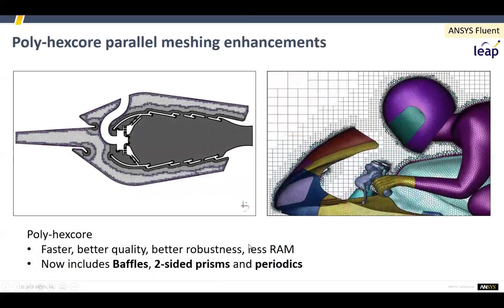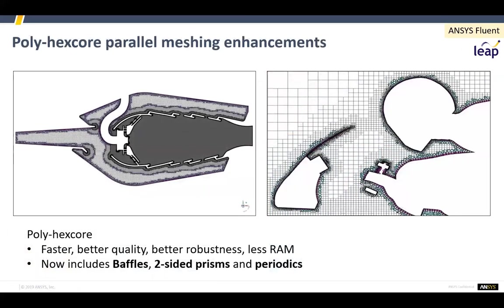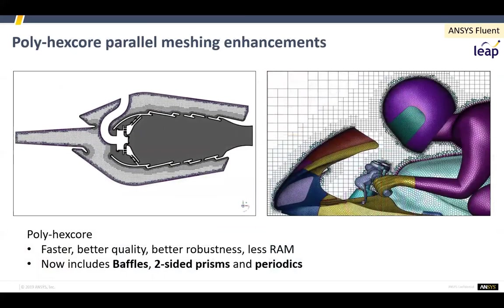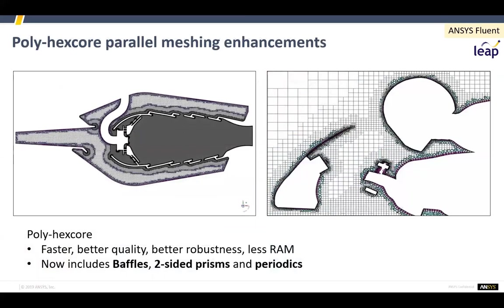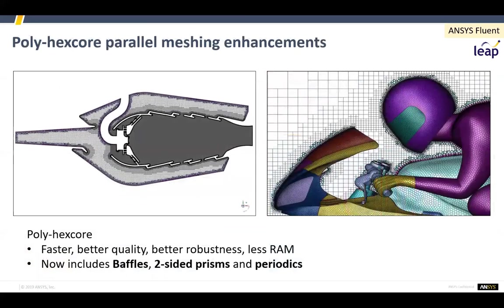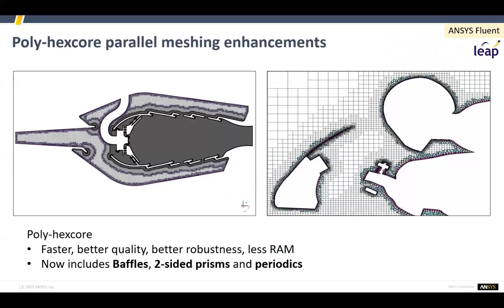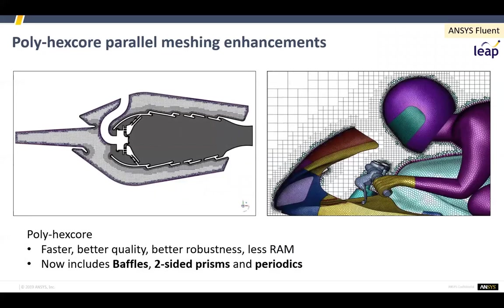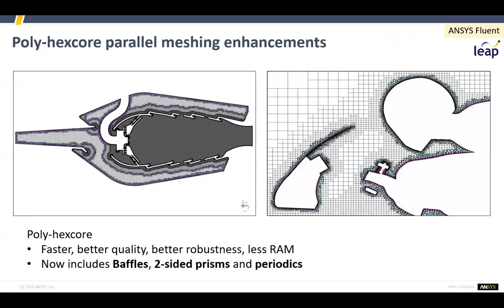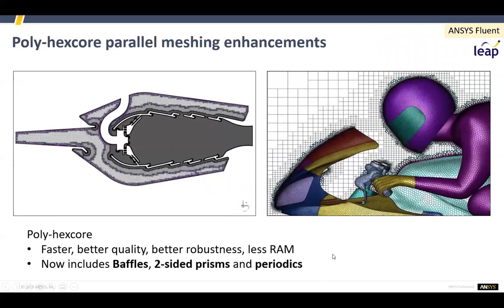There are enhancements to parallel meshing: speed-up improvements, robustness improvements, and reduced RAM usage. Previously you could not use parallel meshing if you had baffles, two-sided prisms, or any sort of periodics. Those restrictions have been removed.